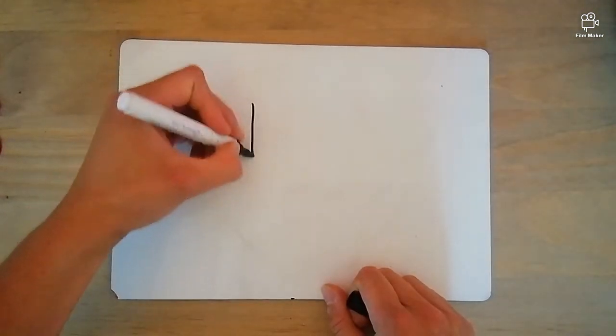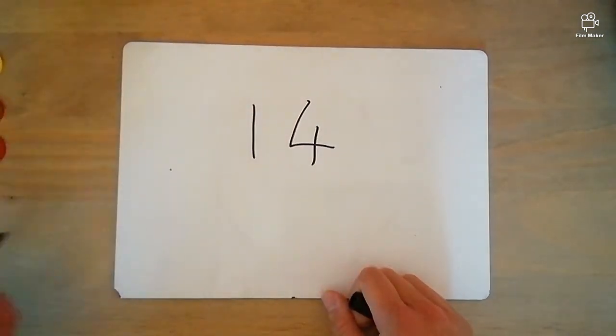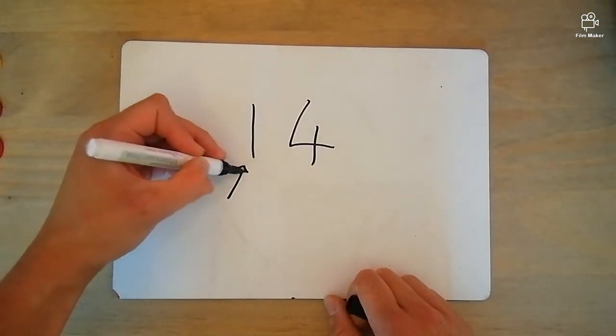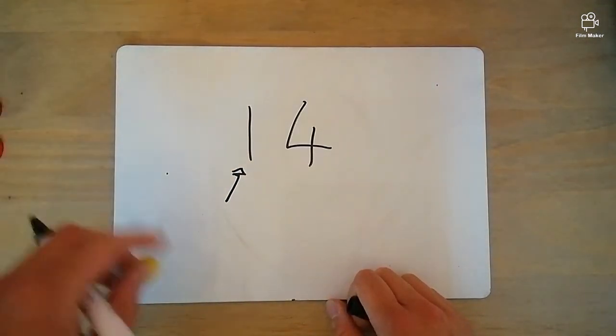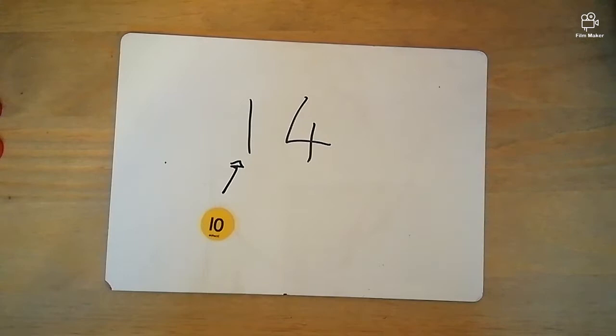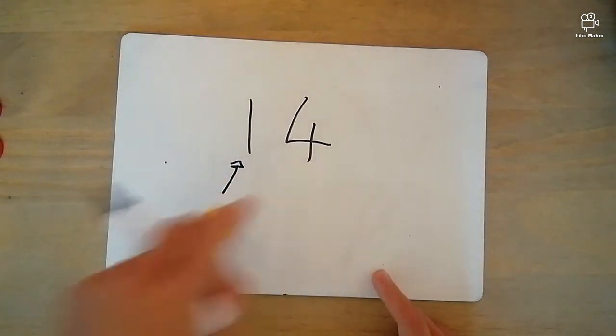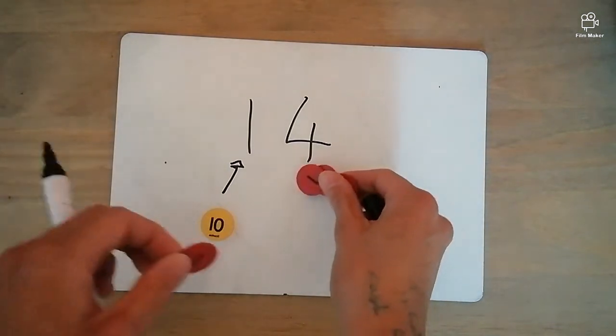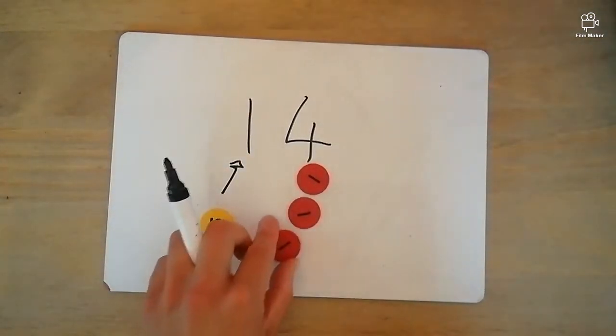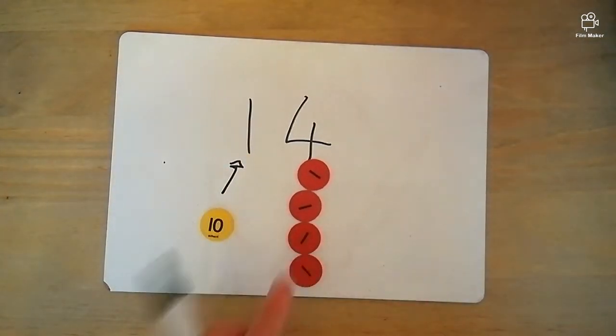For example, in the number 14, the numerical value of this isn't 1, it's actually 10. The numerical value of this in our ones column is 4, and we can represent that with four little tokens here.